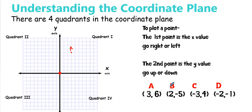For point B at (2, -5) — start at the origin. I go over two: one, two. Then negative five, which goes down: one, two, three, four, five. That would be my B value.